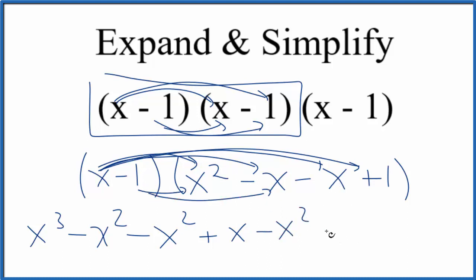Negative 1 times negative x, that's our positive x. And negative 1 times 1, that gives us negative 1.